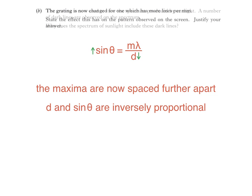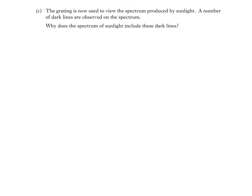Finally, Part C says the grating is now used to view the spectrum produced by sunlight. A number of dark lines are observed on the spectrum. Why does the spectrum of sunlight include these dark lines?